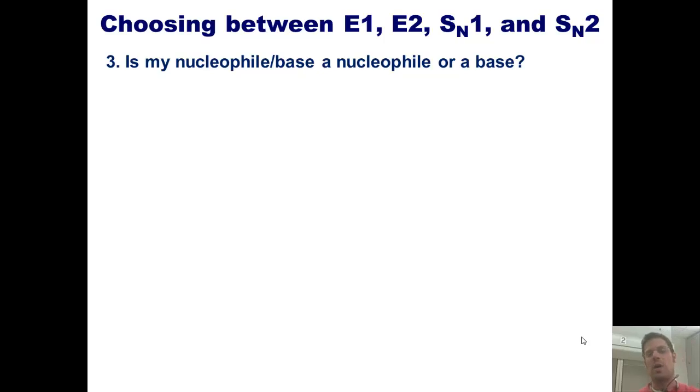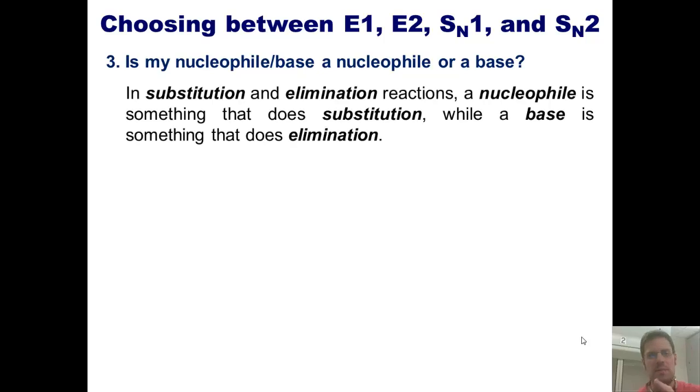Now notice, in questions one or two, I haven't had to make the distinction yet as to which of these two it is. We don't do that until we get to question number three. Let me explain. In substitution and elimination reactions, a nucleophile is something that does substitution, while a base is something that does elimination. The letter S in SN1 and SN2 stands for substitution, and the letters N stand for nucleophilic. Thus, a nucleophile in a substitution elimination scenario is something that will prefer to do substitution, while a base will prefer to do elimination.